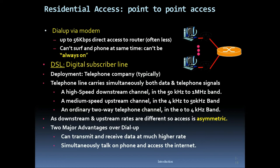DSL uses a high-speed downstream channel in the 50 kHz to 1 MHz band, a medium-speed upstream channel in the 4 kHz to 50 kHz band, and an ordinary two-way telephone channel in the 0 to 4 kHz band. Since downstream and upstream rates differ, access is asymmetric.